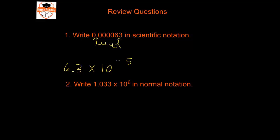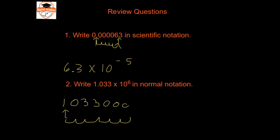For question 2, to write 1.033 times 10 to the 6th in normal notation, we start with the digits we have and move the decimal place to the right 6 places: 1, 2, 3, 4, 5, 6. Filling in zeros as needed gives us the correct answer in normal notation.